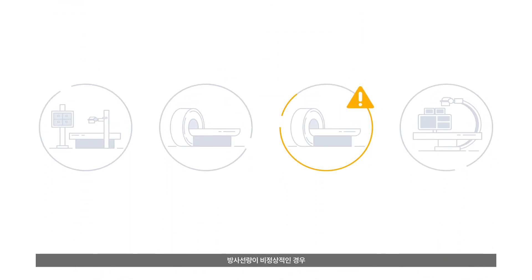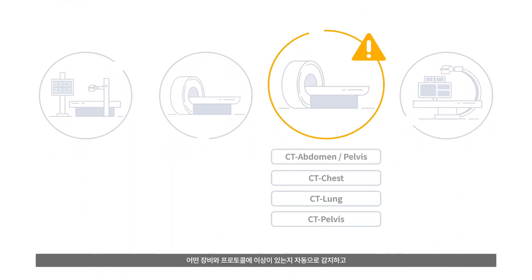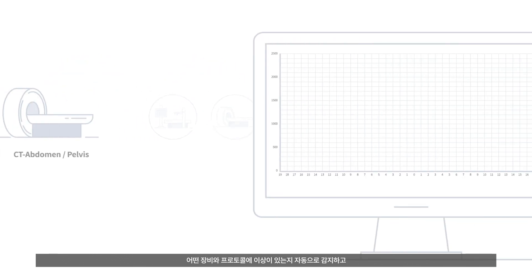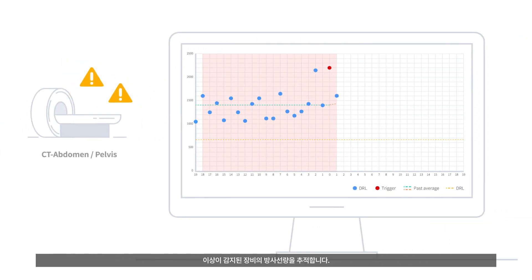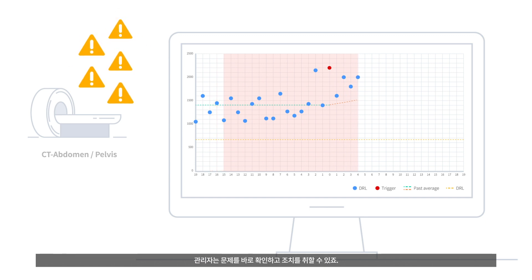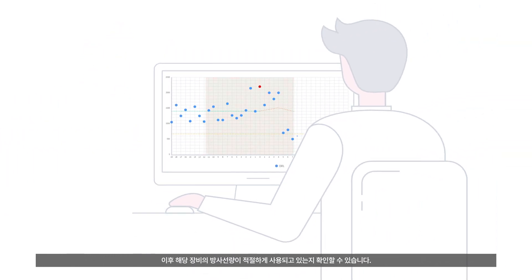In the case of an abnormal event, Infinite Dose M automatically detects which device and protocol triggered the event and tightly keeps track of their dose levels, so you can easily identify and make adjustments to that specific protocol and continue to monitor the course of dose levels.